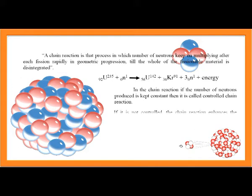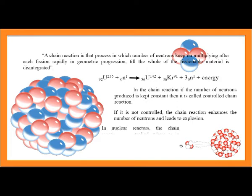If not controlled, the chain reaction enhances the number of neutrons and leads to explosion. In nuclear reactors, the chain reaction is controlled, whereas in nuclear bombs it is uncontrolled.